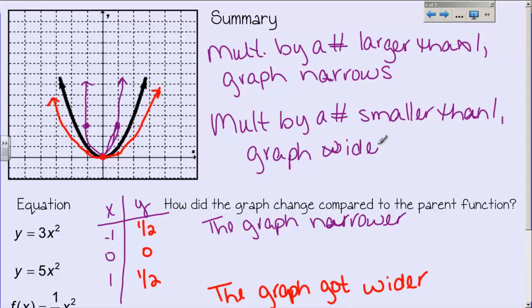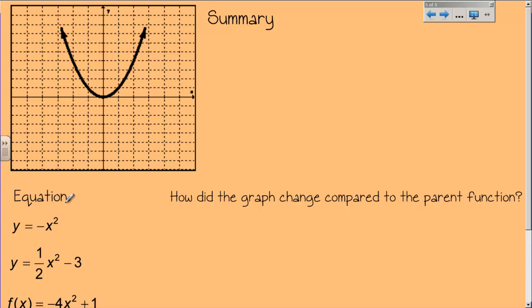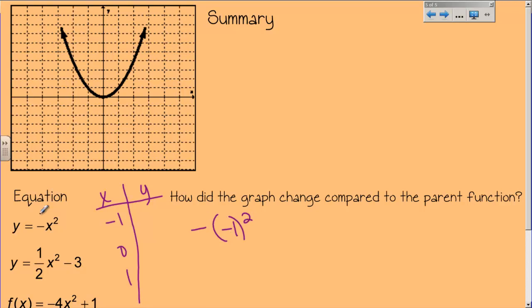Let's do one more set of examples to see what happens when I put it all together. With the table, I have x values negative 1, 0, and 1. This is negative x squared. When I plug this in: I have negative of negative 1 squared. I'm squaring negative 1, but also doing the opposite of x squared. Negative 1 squared becomes 1, but taking the opposite makes it negative 1. 0 squared is 0, and the opposite of 0 is still 0. And positive 1 squared is 1, and the opposite of that is negative 1. So I plot: negative 1 and negative 1; 0 and 0; and 1 and negative 1.